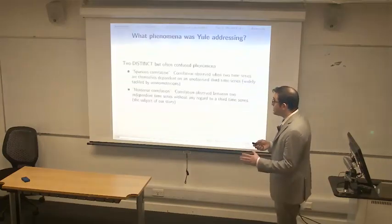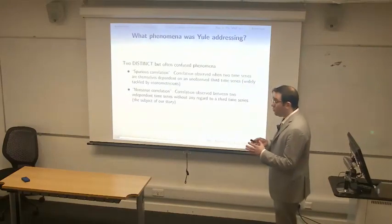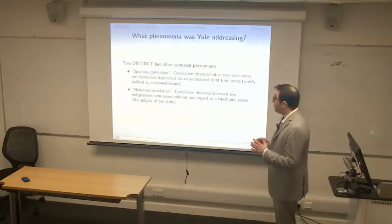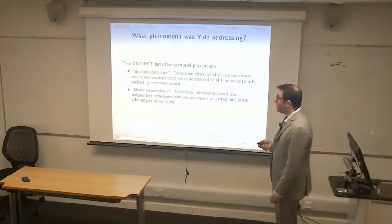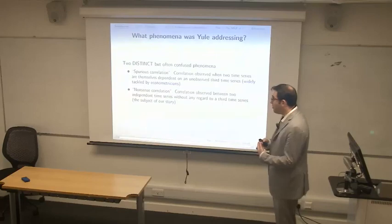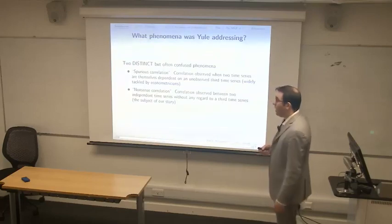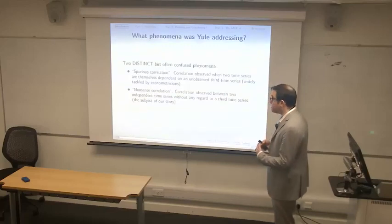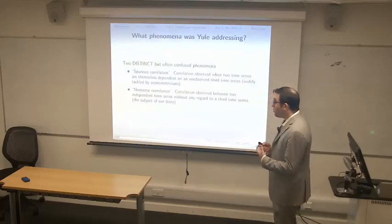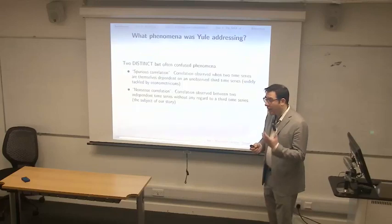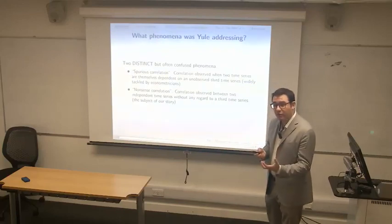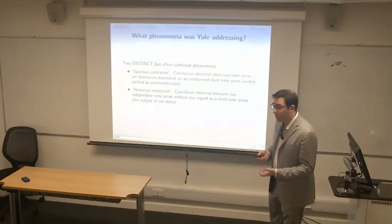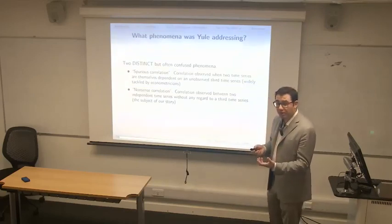Yule is speaking about two distinct but often confused phenomena. The first is spurious correlation — that's correlation observed when two time series are themselves dependent upon an unobserved third time series, and this has been widely tackled by econometricians. But nonsense correlation is correlation observed between two independent time series without any regard whatsoever to an underlying third time series. The simplest example is two IID random walks simulated by coins, with no reason to think there's a third time series in the background.